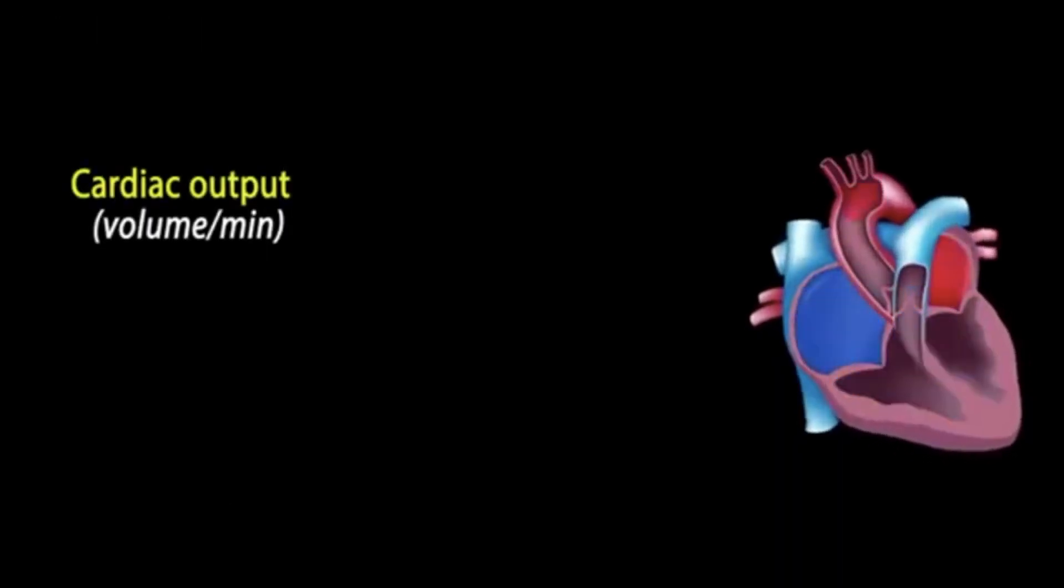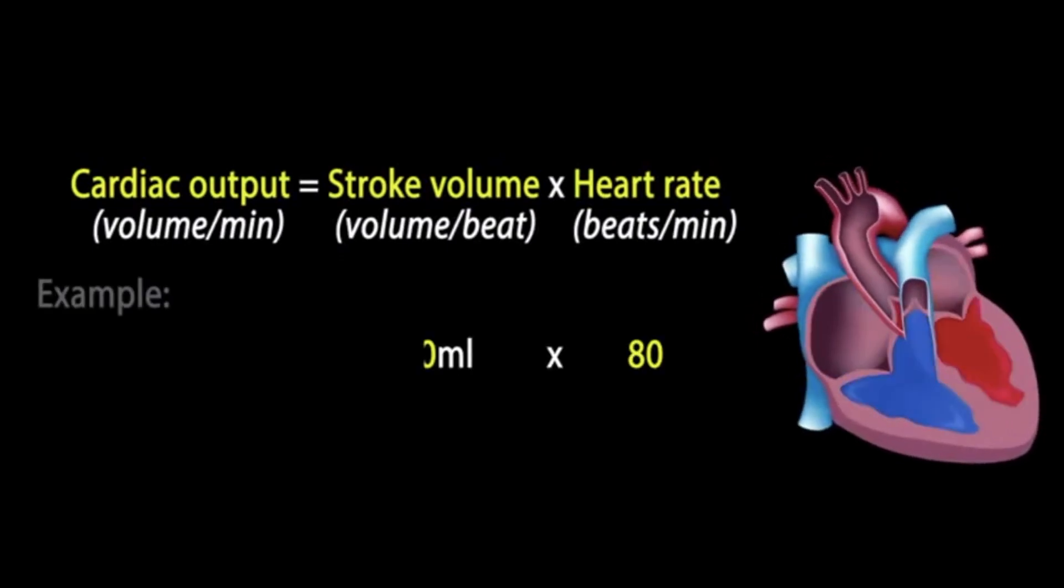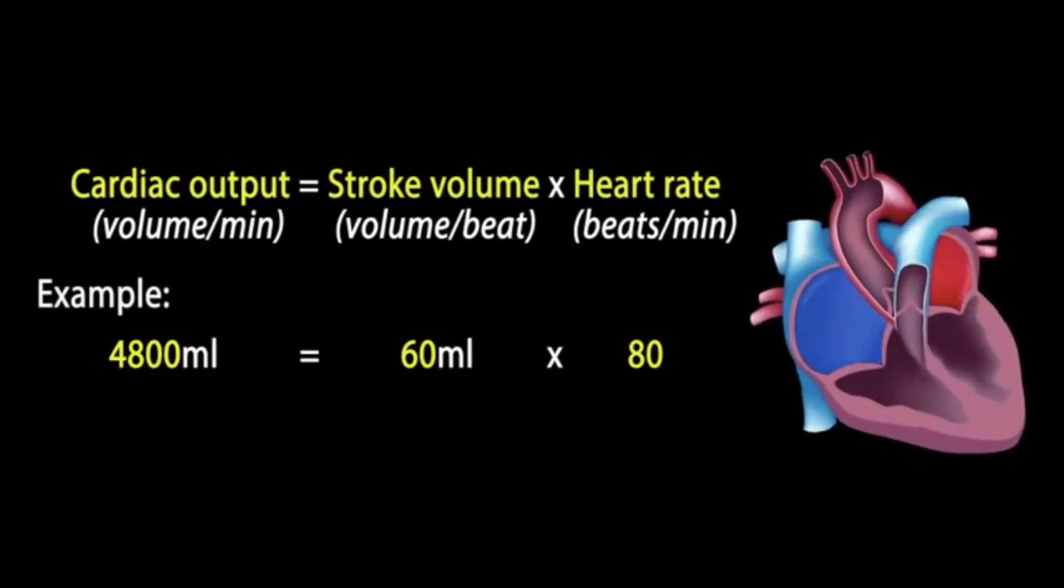The Swan-Ganz measures continuous cardiac output and cardiac index. Cardiac output is the amount of blood being pumped by the heart per minute, measured in liters per minute.